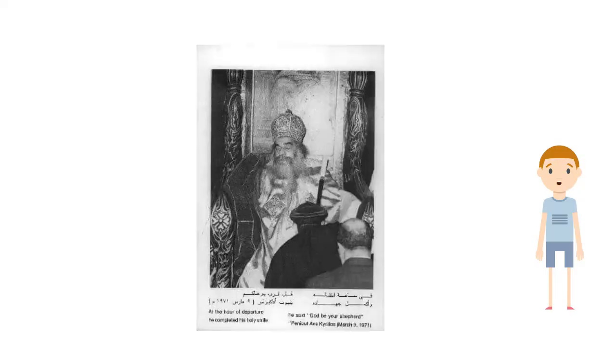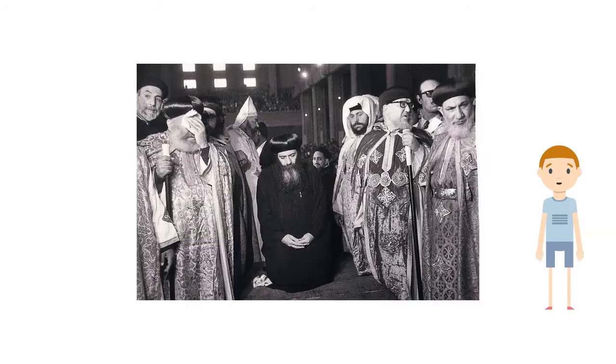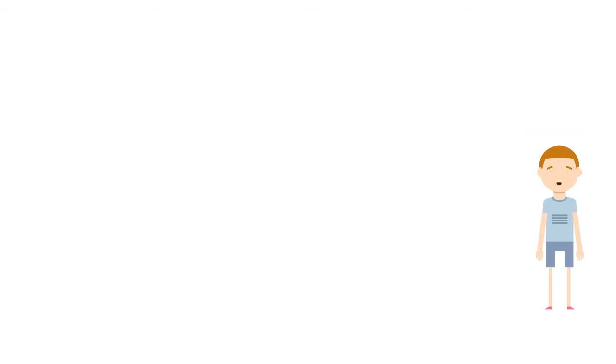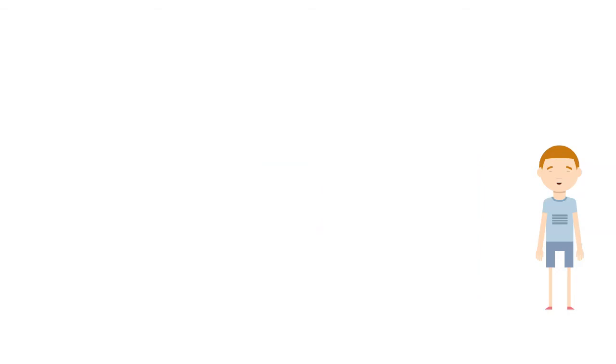On March 9, 1987, His Holiness Pope Cyril VI departed in peace. The Holy Synod met together to plan for the next pope, and Pope Shenouda was a great fit for the title of pope for the Coptic Orthodox Church. He was enthroned as the 117th Pope of Alexandria.